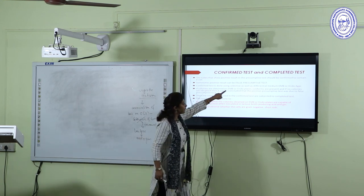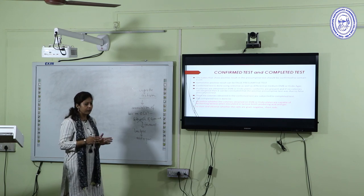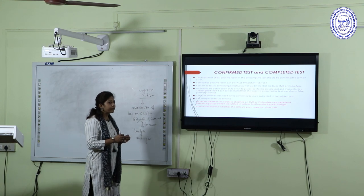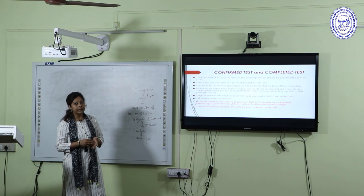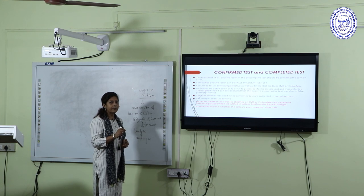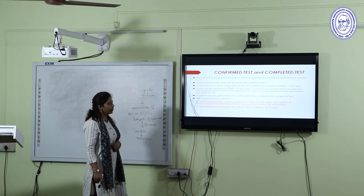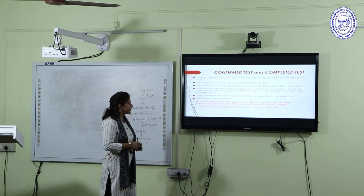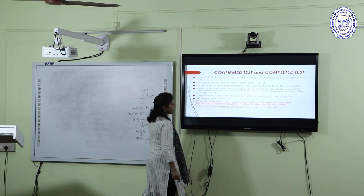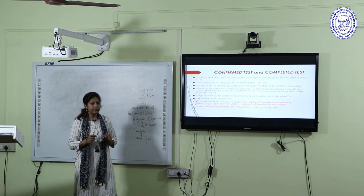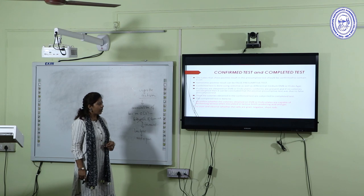As differential media, EMB and Endo agar can differentiate between two varieties of coliforms by showing different colored colonies. Light or deep colored colonies, or colonies with or without metallic sheen, indicate different types. There can be fecal coliforms, non-fecal coliforms, or a combination of both present in water.